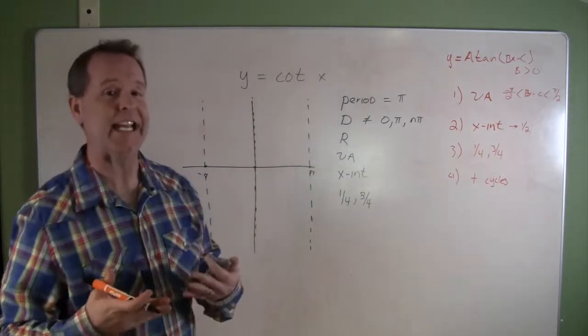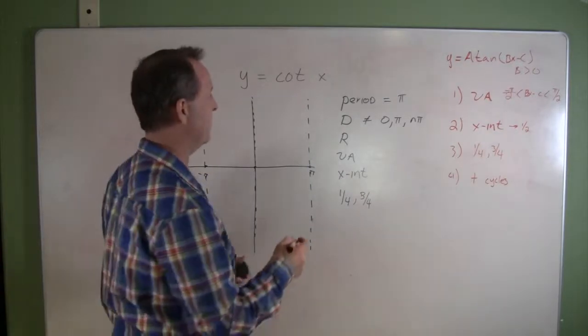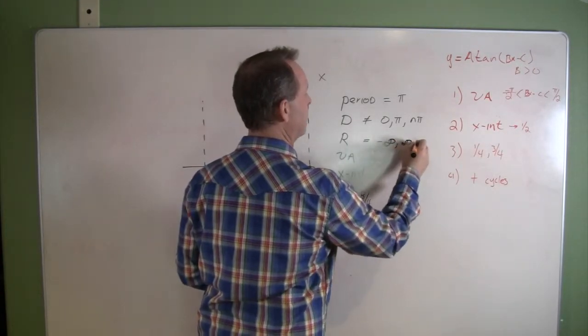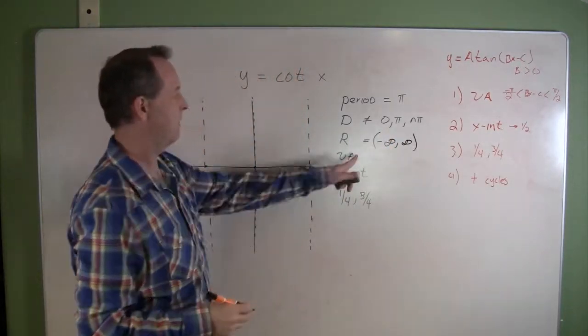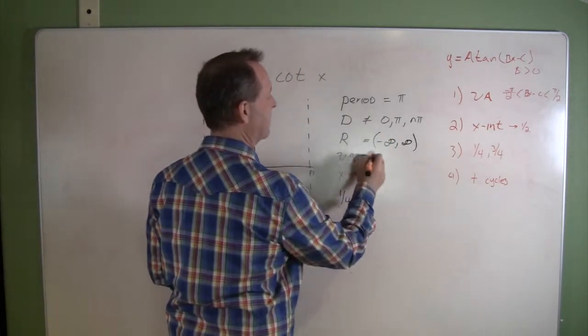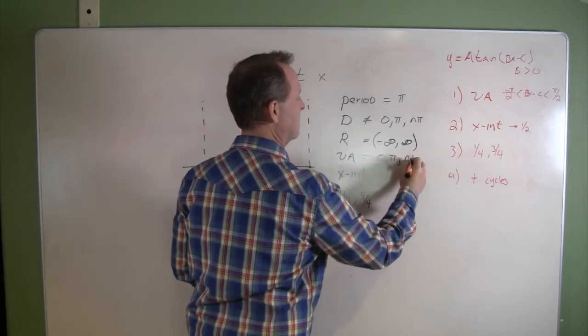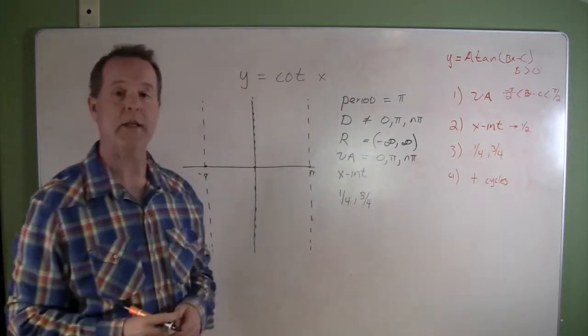Its range is all real numbers, all values, so we're going to make it from negative infinity to positive infinity. The vertical asymptotes we defined by looking at our domain.